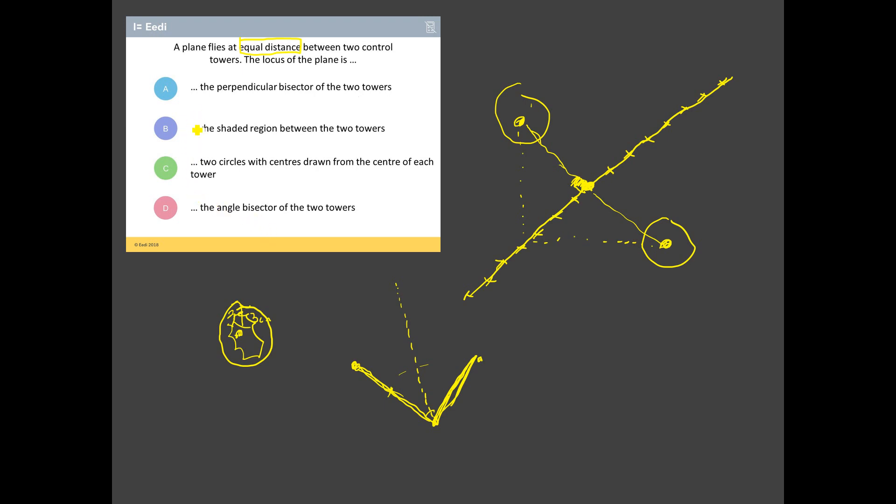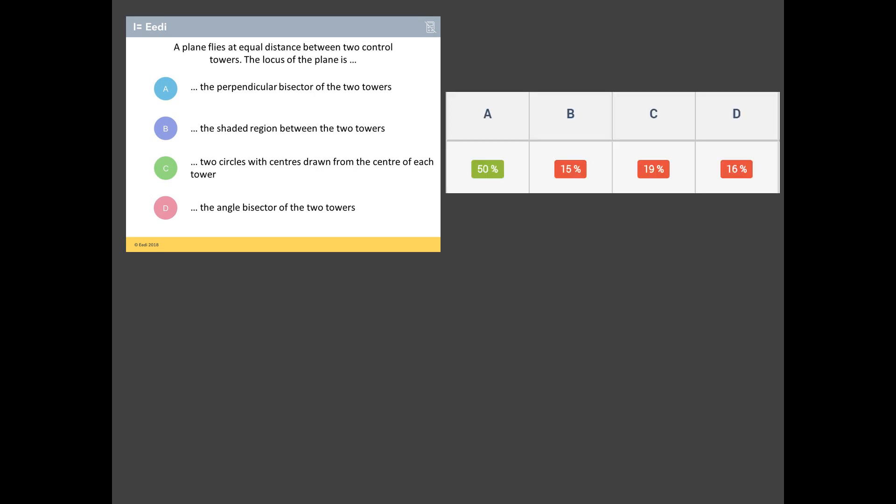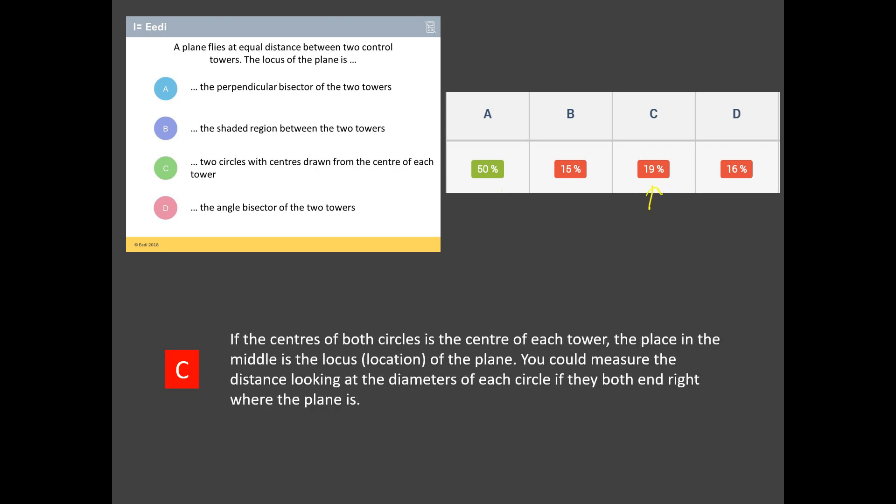So, after all that explanation, I reckon the correct answer to this is A. It'd be annoying now if I'm wrong. Lucky I'm right. But look at that. Only 50% of students got it right. Just as many students got this wrong. And indeed, the wrong answers are pretty evenly split. But C just about takes it. Two circles with centers drawn from each of the towers.